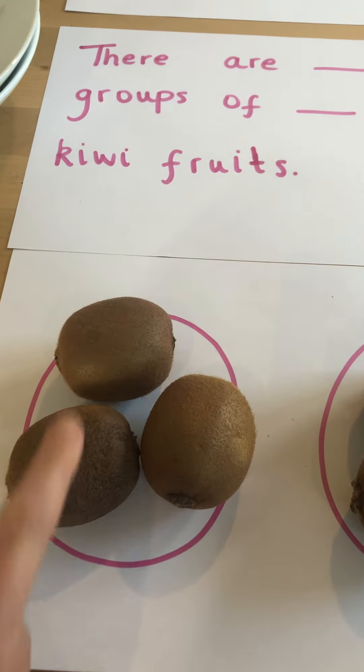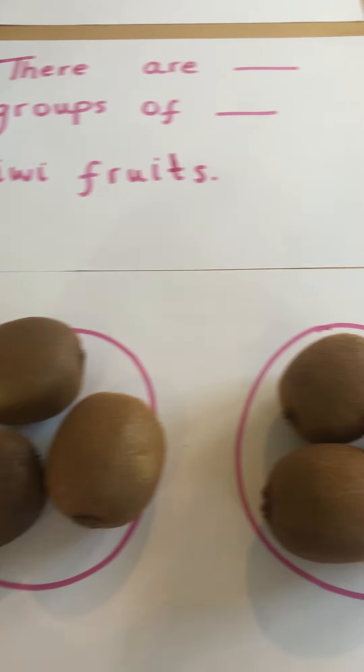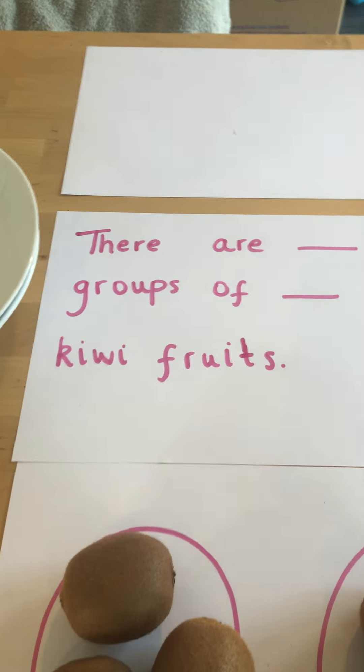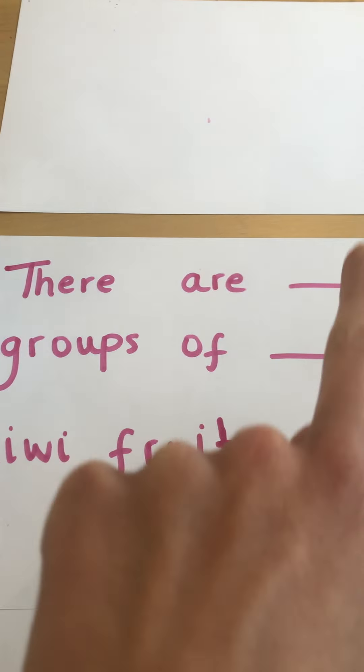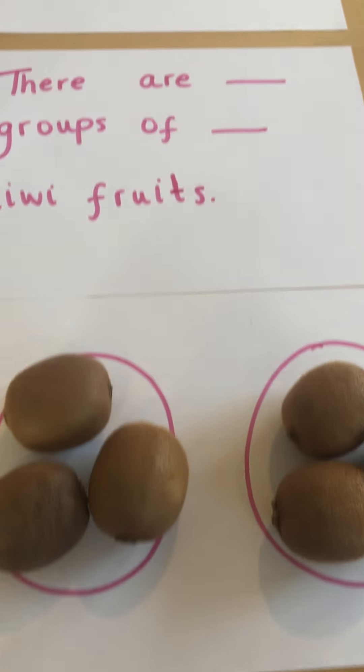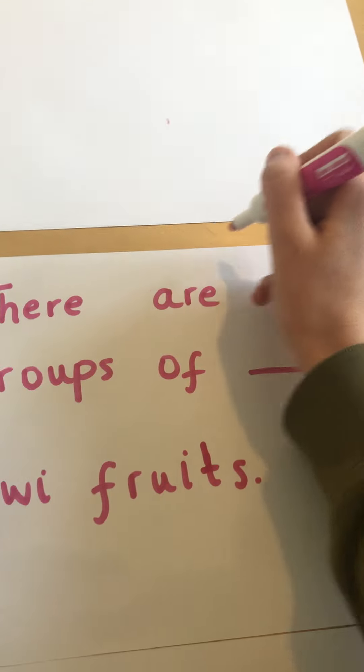There are one, two, three in this group and one, two, three in this group. Shall we fill the sentence in now? There are groups of kiwi fruits. Looking at them, we know we've got two groups.